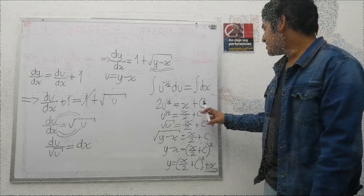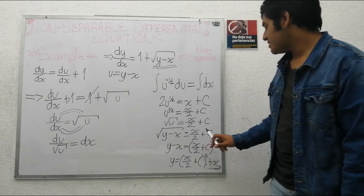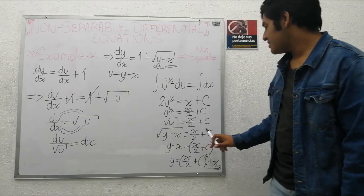Doing algebra, we have this. We now reverse our change of variable and get this equation. Then we simply isolate y to have our solution. Doing the necessary algebra, we obtain our function that is the solution to the differential equation.